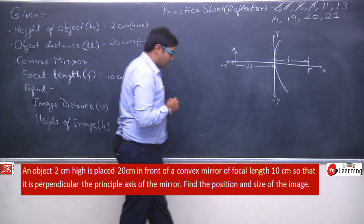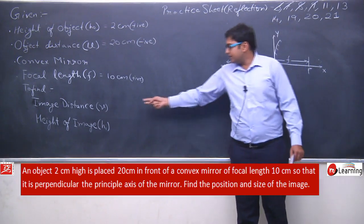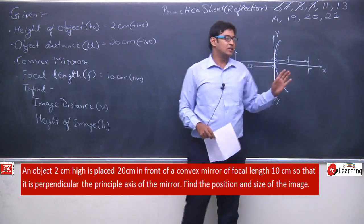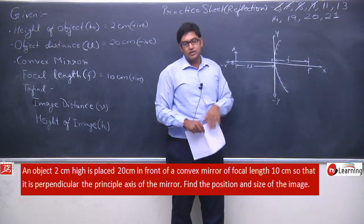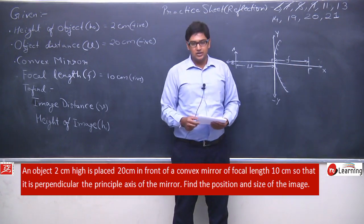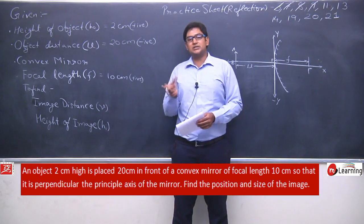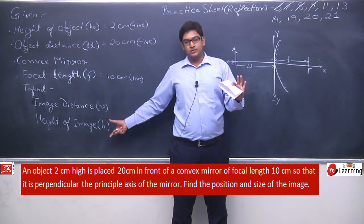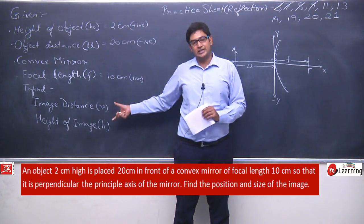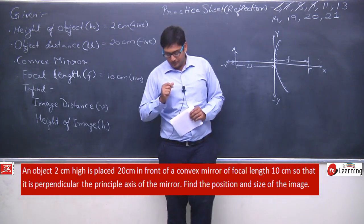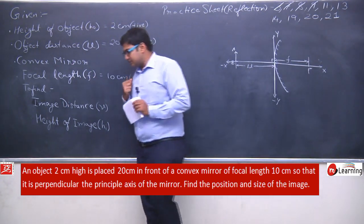Now we need to find image distance and image height. We don't know yet where the image will form — whether to the left or right, above or below the axis. So we cannot determine the sign of v and hi right now. We will find those signs through the formula and the calculated answer. For now, assume both positive. We have collected all data, sketched the diagram, and applied sign conventions. Now let us solve.